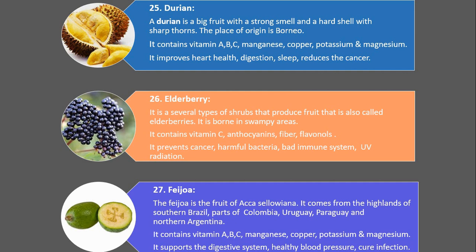Number 26. Elderberry. It is several types of shrubs that produce fruit that is also called elderberries. It is found in swampy areas. It contains vitamin C, anthocyanins, fiber and flavonols. It prevents cancer, harmful bacteria, bad immune system issues, and UV radiation damage.